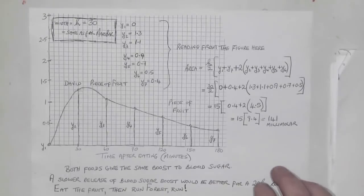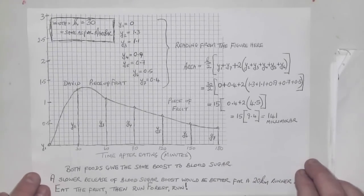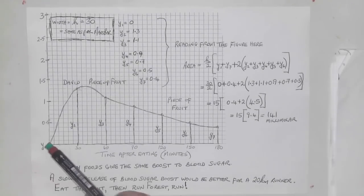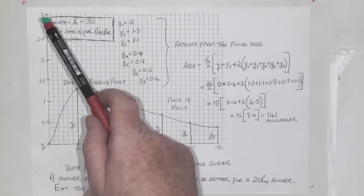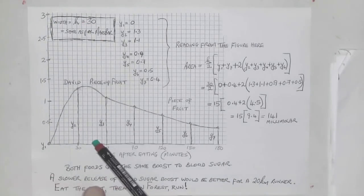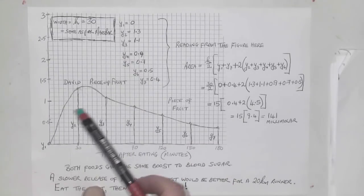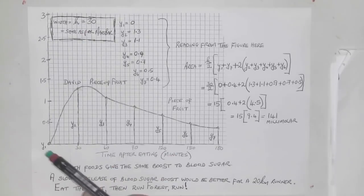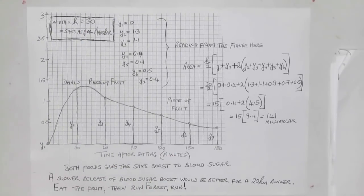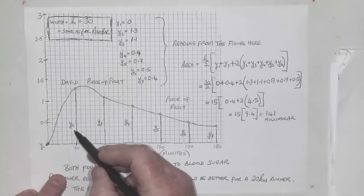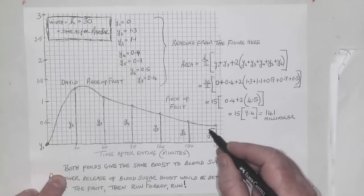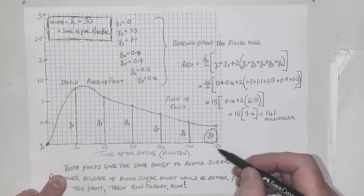Now I do the same thing again. Once I've done the Mars bar, the piece of fruit is the same deal. I use the same width because I want to compare the boosts. H is 30. This time y1 is 0, but y7 is not 0. Looking at y7, I come up to here and go across—that's 0.4.